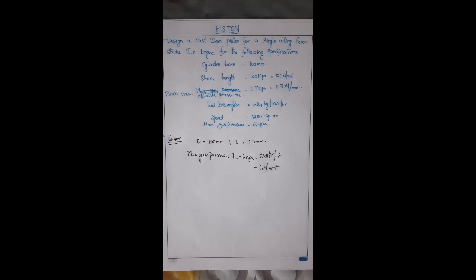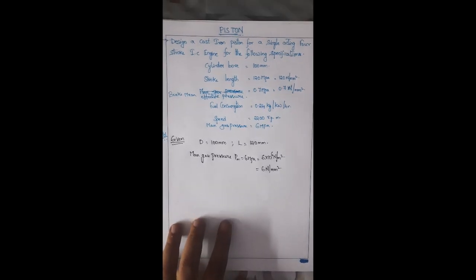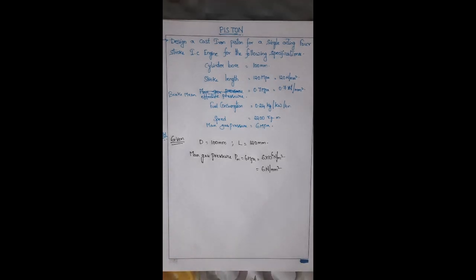The problem states: design a cast iron piston for a single acting four-stroke IC engine with the following specifications. Cylinder bore diameter is 100 mm, stroke length is 120 mm, brake mean effective pressure is 0.7 MPa, fuel consumption is 0.24 kg per kilowatt per hour, speed is 2200 rpm, and maximum gas pressure is 6 MPa.